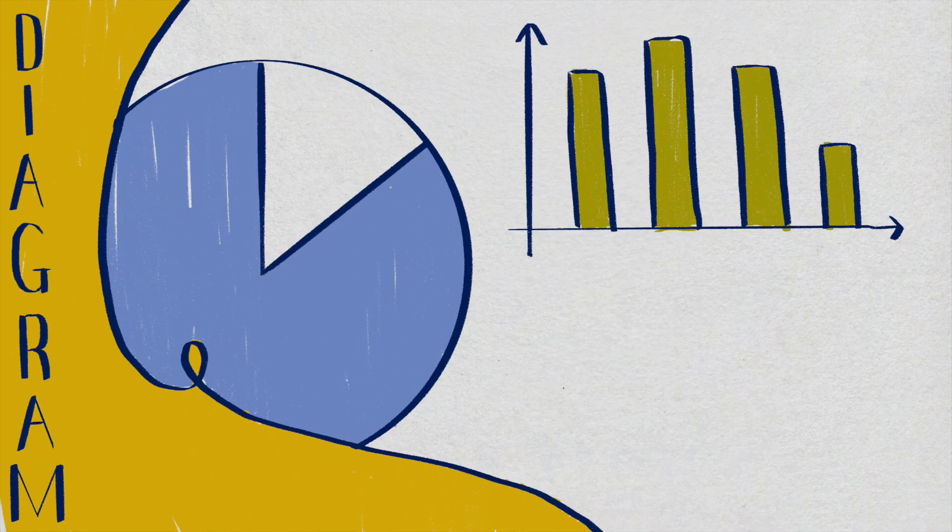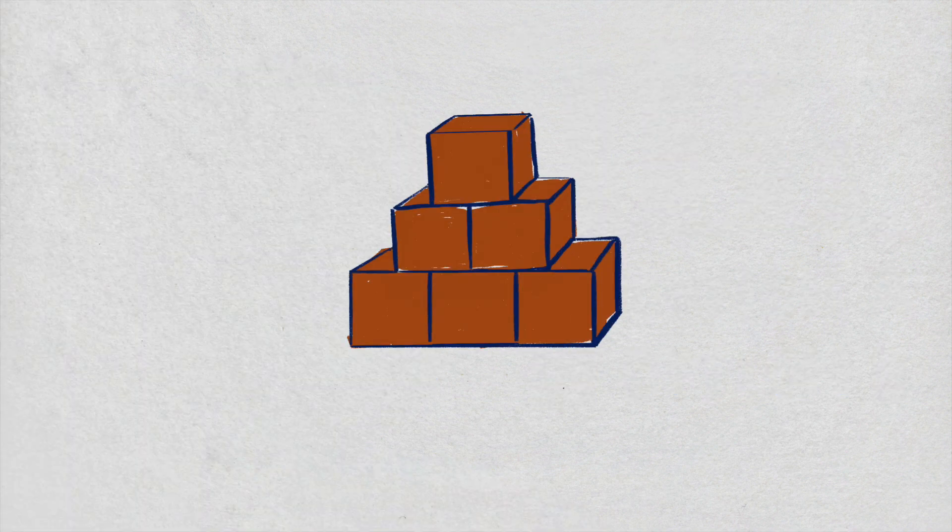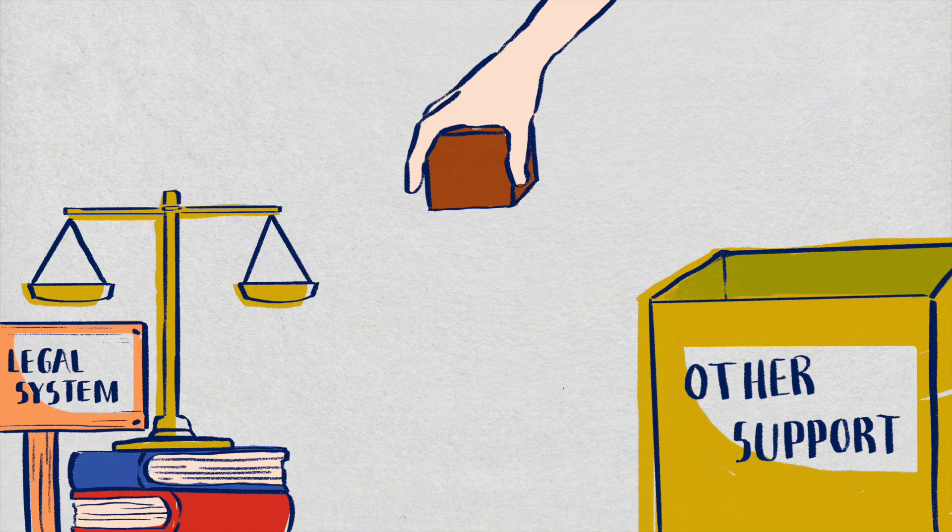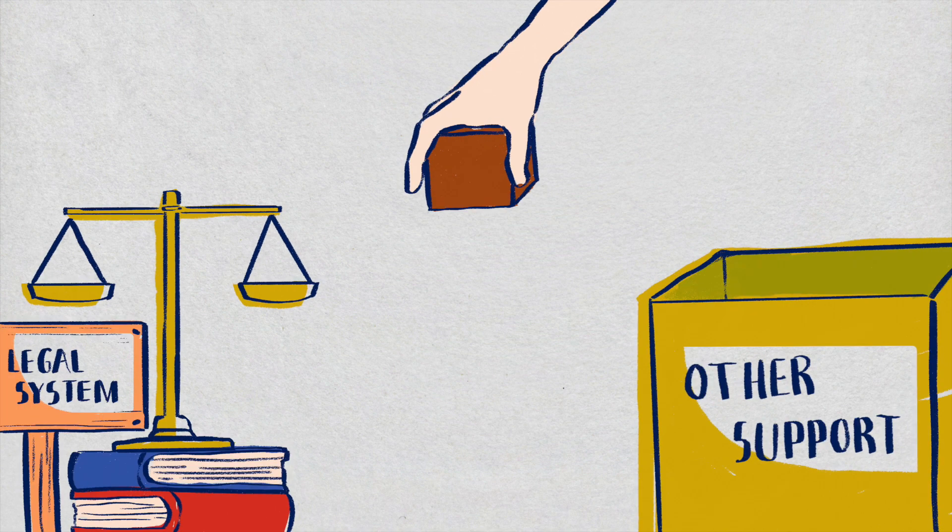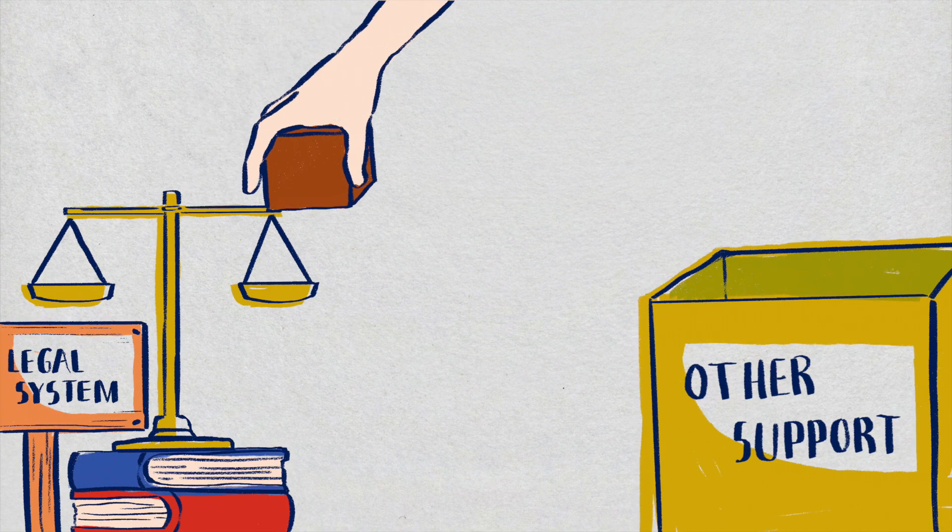Diagrams can be a useful tool, such as when explaining different options. Manage, with empathy, a client's expectations about what the legal system can deliver and where the law might not reflect the same values as the client, for example, in relation to the seriousness of what they have experienced.